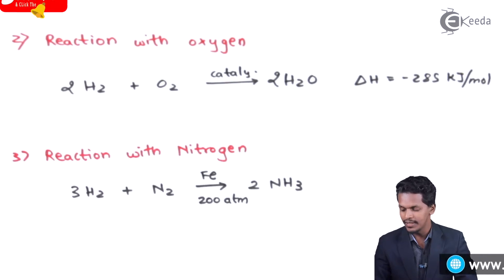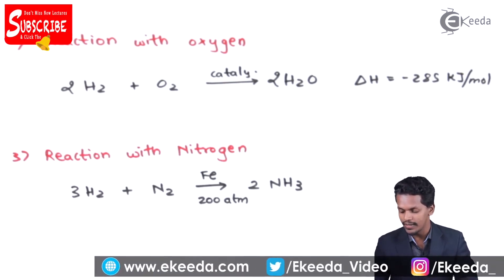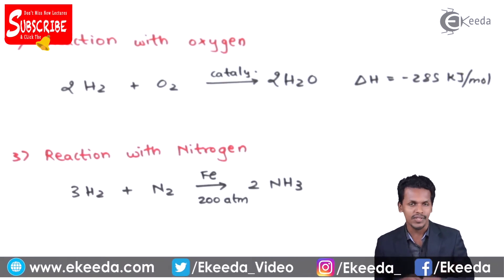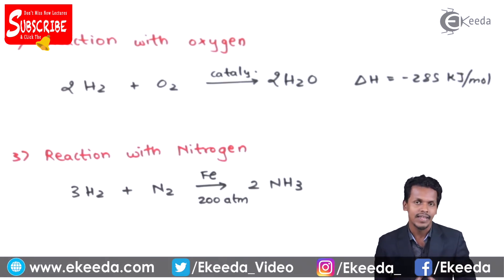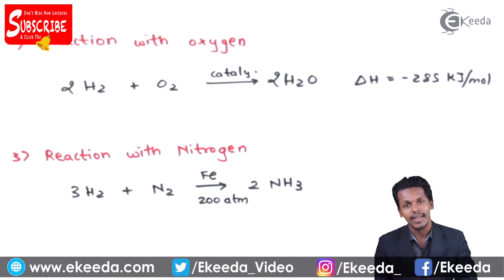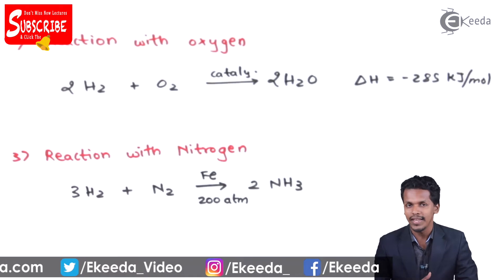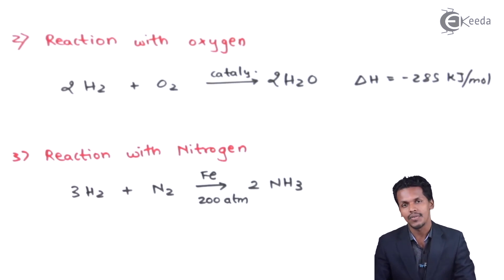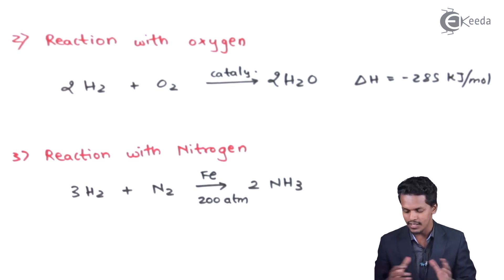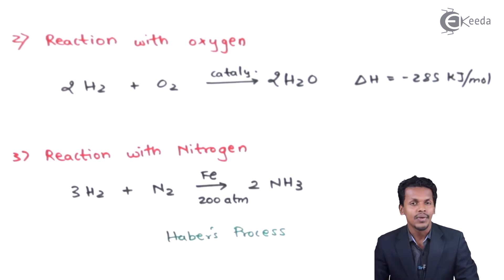This reaction is also known as Haber's process. Hydrogen and nitrogen are both compressed at high temperature and high pressure, using a catalyst like Fe₂O₃ along with Al₂O₃, which acts as a promoter. This helps to form ammonia, and this is known as Haber's process.